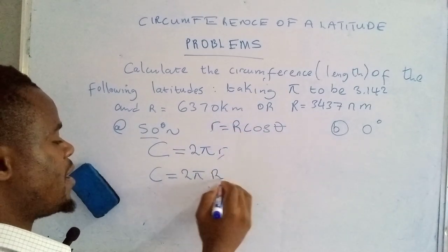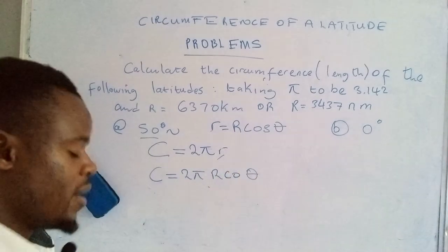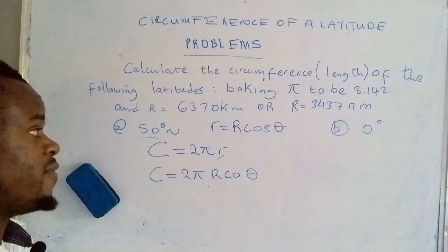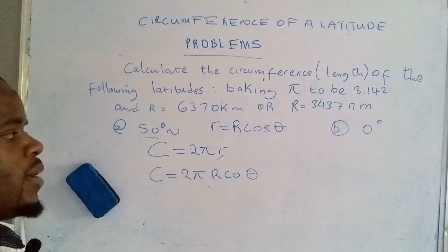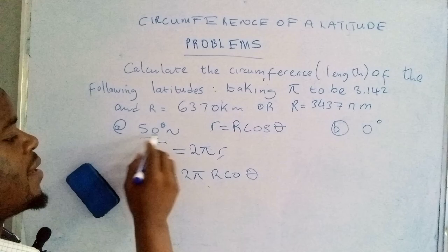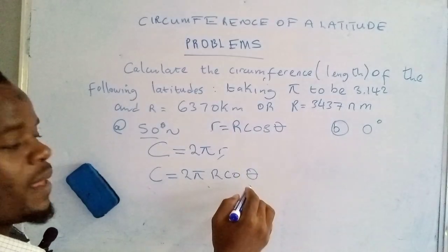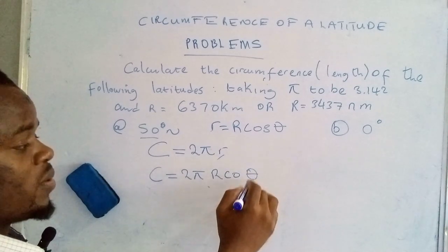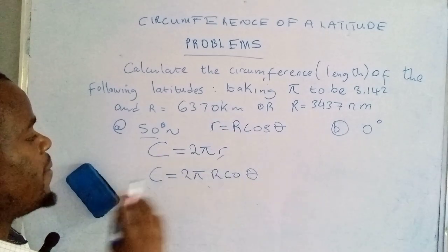So now if you want to determine the circumference of any latitude, you have to make use of that. Now in this case θ, that is the one which is here denoted by that Greek letter, it denotes an angle. So that is the angle and that is the latitude. That is the one you will be writing here.